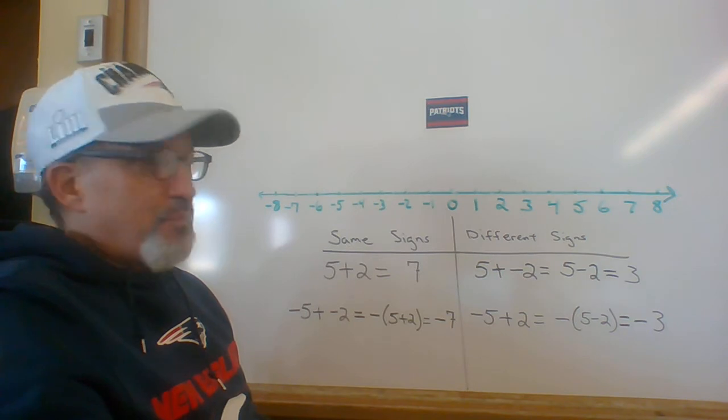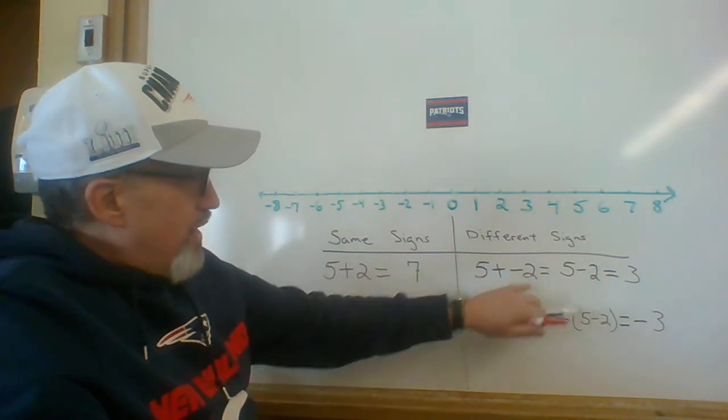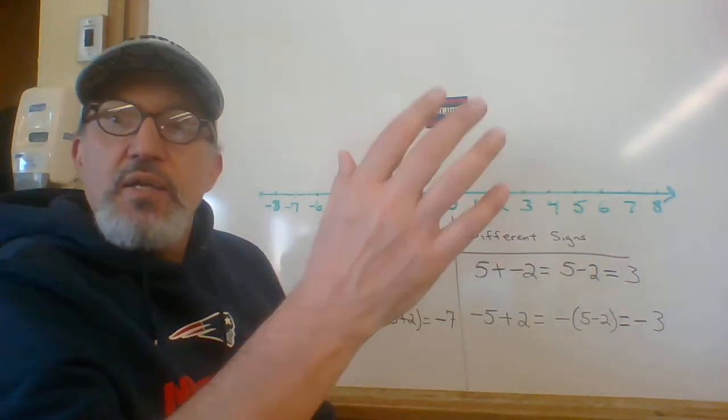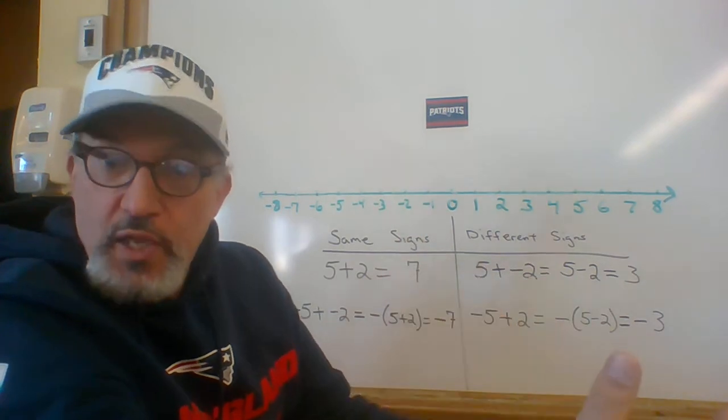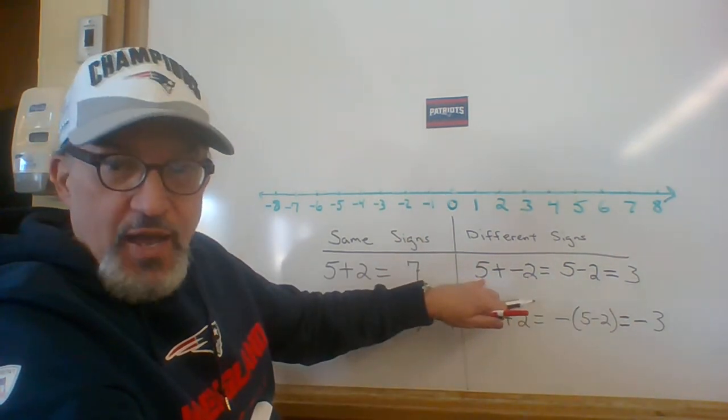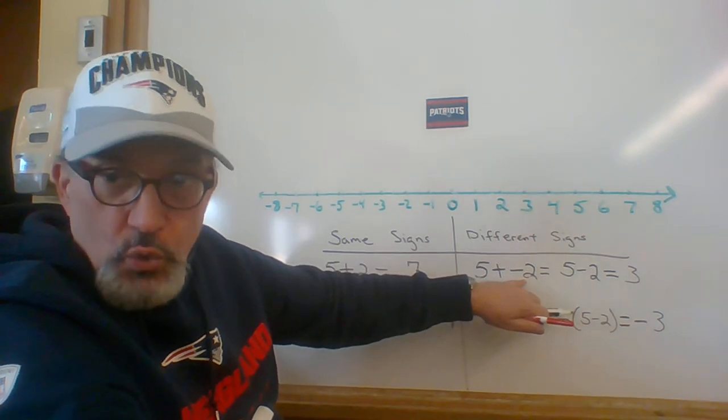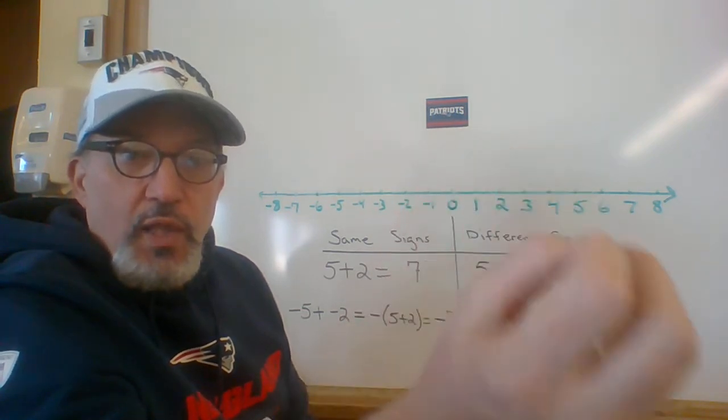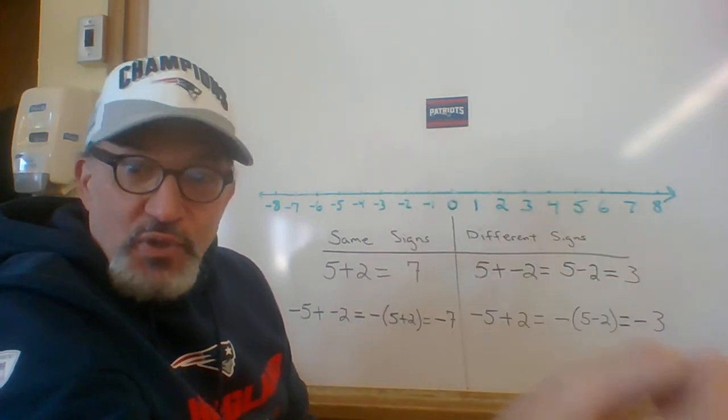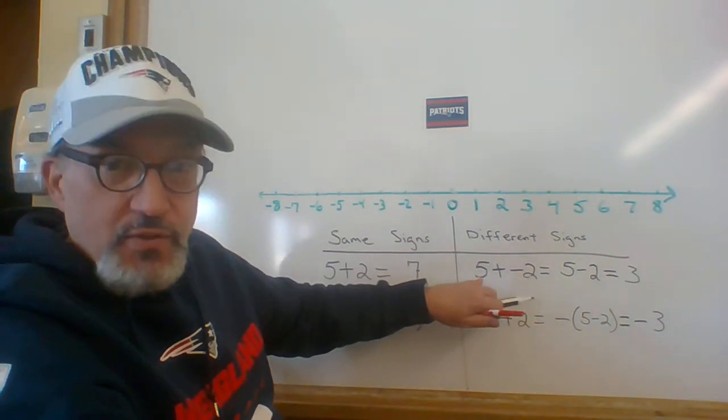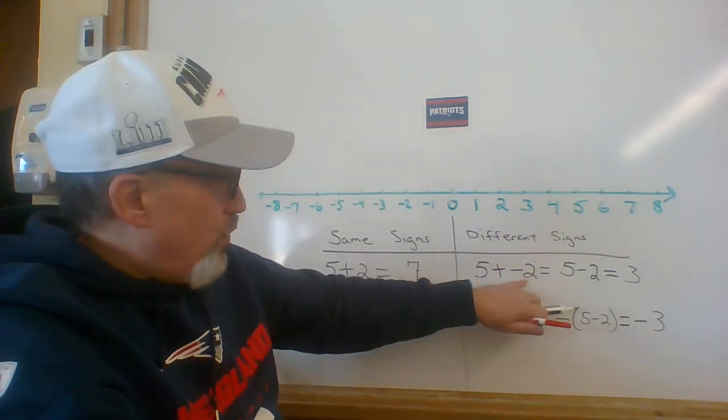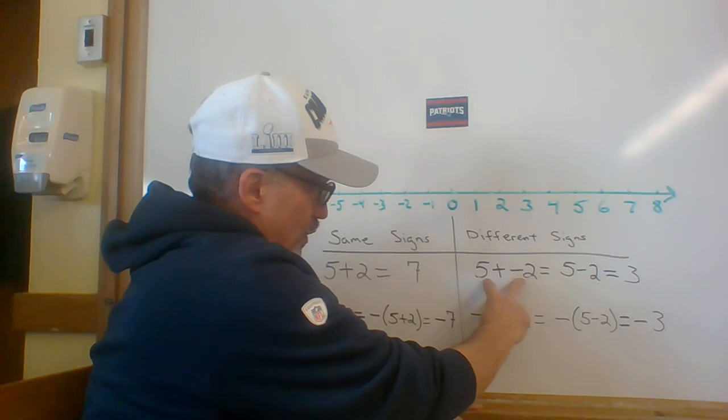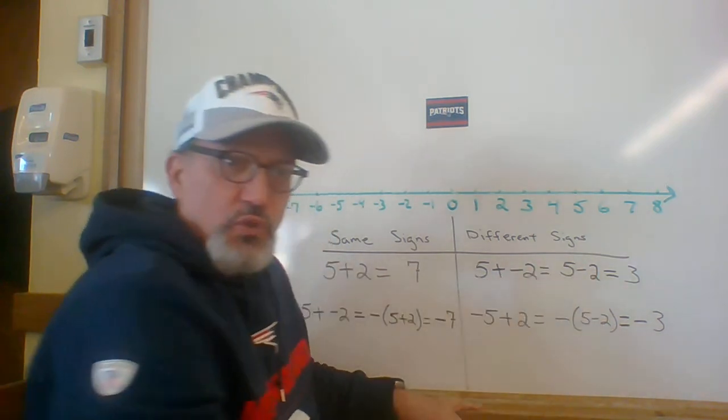When the signs are different, 5 plus negative 2 or negative 5 plus 2, in either case, the signs are different. Here's the rule: subtract the absolute values the way you would have in first grade. The absolute value of 5 is 5, the absolute value of negative 2 is 2. You do 5 minus 2. And then the sum will have the same sign as the number with the higher absolute value. In this case, 5 has a higher absolute value than negative 2. The 5 is positive, so the answer is positive.